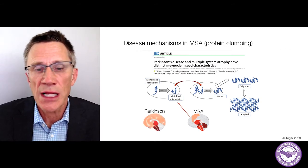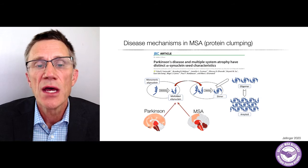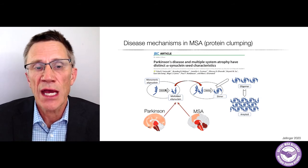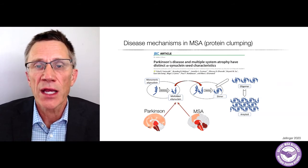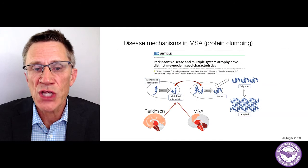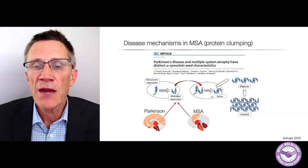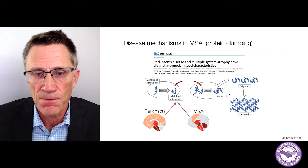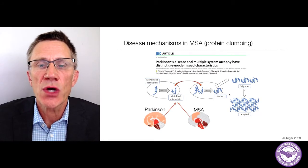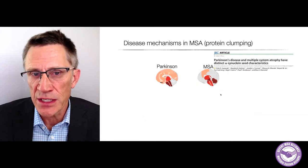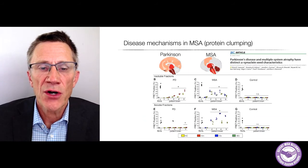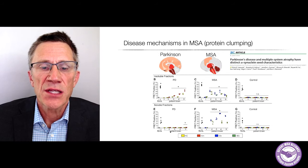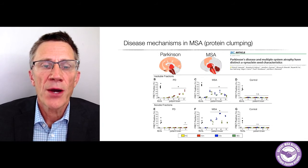In other test tubes and cell cultures, they also took Parkinson's aggregates and put them together with monomeric normal synuclein. They then followed the process of oligomerization, amyloid, and aggregate formation. What they saw is that the dynamics were very different.